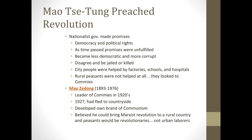Where was the influence of the communists? The Nationalist government had made promises about democracy and political rights, but as time passed those promises went unfulfilled. They became less democratic and more corrupt — if you spoke out, people were jailed or killed. City people were helped by schools and factories and hospitals, but rural peasants didn't get any help at all. By consequence, they turned to the communists and their leader Mao Zedong. Because Chiang Kai-shek is essentially hunting them down, they flee to the countryside and develop their own brand of communism. While Lenin talked about a dictatorship of the proletariat — urban workers throwing off their chains — Mao is talking about a rural peasantry as the revolutionaries, not urban laborers.